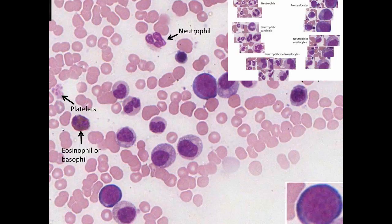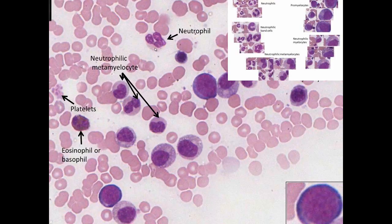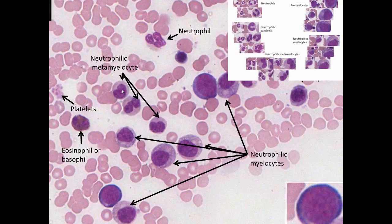Here we see platelets and a cell that appears to be an eosinophil or basophil — certainly not a neutrophil. Here is a neutrophil with its lobulated nucleus and thin nuclear component with gray cytoplasm. The neutrophil metamyelocyte shows a somewhat indented nuclear profile, and the neutrophilic myelocyte has a combination of blue, gray, and pink colors reflecting azurophilic and specific granules, with an otherwise largely oval nucleus.